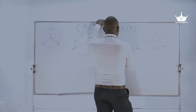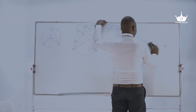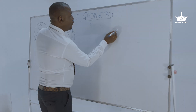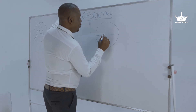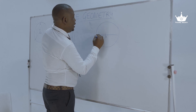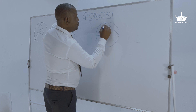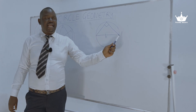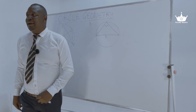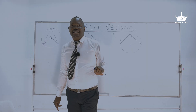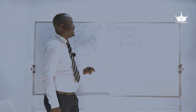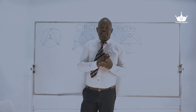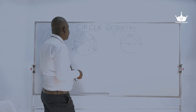Let's move on to the next theorem. We have a diameter and a semicircle. The angle subtended by a diameter is 90 degrees. A semicircle subtends an angle of 90 degrees at the circumference.